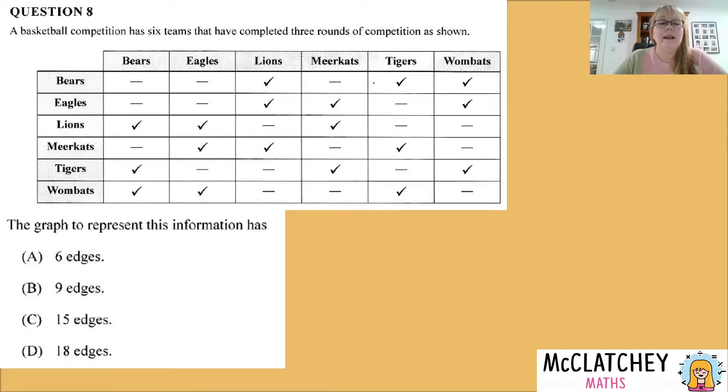Now let's look at question eight, a basketball competition has six teams that have completed three rounds of competition as shown. So we've got a table or a matrix. And instead of ones and zeros, we've got ticks and dashes, ticks meaning that they competed against one another and a dash, meaning that there was no competition between the two teams. The graph to represent this information has got six edges, nine edges, 15 edges or 18 edges. Well, one of the easy ways we could do this would be to draw it, but that's going to take a while. I'm going to draw it for you later after we go through the solution, but logical thinking would actually get you an answer quicker. And this is why it's a good idea to have an understanding of how networks are actually made up. And that way you don't have to waste time drawing things that you don't need to.